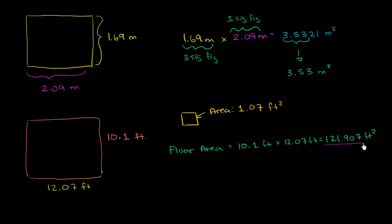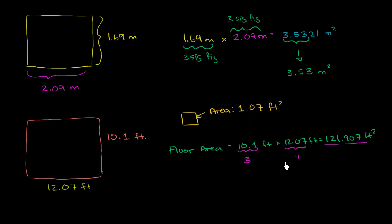Now there might be a temptation here to say I had four significant figures and three significant figures, so my area should not have more than three. That would be okay if the area were the final answer — but we're not done. We still need to divide by the tile area. The general rule of thumb is: don't round to significant figures until you are done with your calculation, especially when just multiplying and dividing. If you round early, you introduce more error. So keep the full number and then do the division.